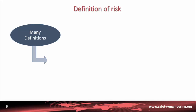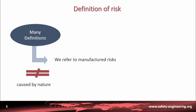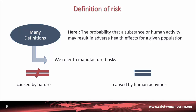We have now to define what risk is. Generally speaking, there are many definitions of risk — for example, scientific or technical ones. We refer in these lectures to manufactured risk, so natural risk or risk caused by nature is not taken into account. For example, we don't deal with roadways, earthquakes or volcanoes. We will refer to risks caused by human activities. For the purposes of our lectures, risk is conceived as the probability that a substance or a human activity may result in adverse health effects for a given population.